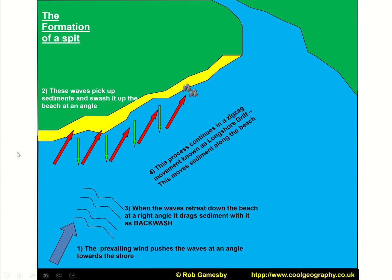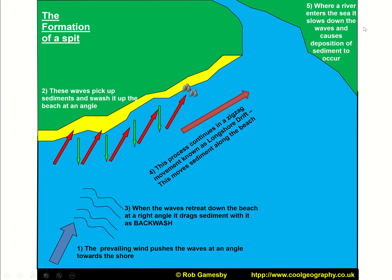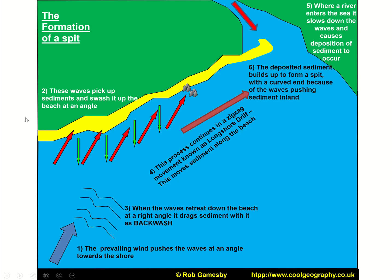That ongoing process moves sediment along the beach, and wherever a river enters the sea it may slow down the waves, causing deposition. That sediment builds up slowly across the river mouth to build a spit. The recurved end forms because waves continue washing in and push sediment in towards the land. Behind the spit, a salt marsh can be created.